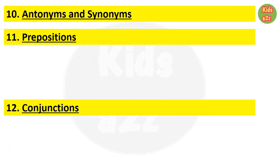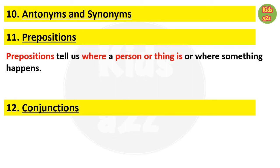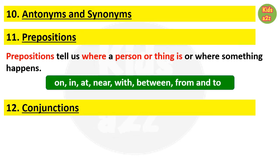Next are antonyms and synonyms — that means opposites and words with the same meaning. The next topic is prepositions, which tell us where a person or thing is, or where something happens. Some common prepositions are: on, in, at, near, with, between, from, and to. In this chapter they will also learn the uses of under, outside, near, down, over, etc.